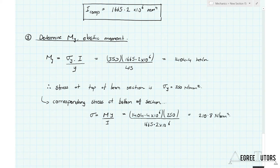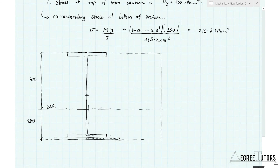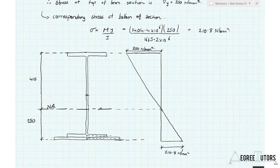The corresponding stress at the bottom of the cross-section works out to 210.8 N/mm², which has not yet reached the yield stress. Assuming compression is induced in the top flange, the top flange will begin to yield first. The stress distribution shows that at the onset of yielding, the bottom is still elastic. The section still has capacity left before becoming fully plastic, so we need to find the plastic moment. To do that, we first need to determine an equal area axis — an axis that splits the compound area into two equal areas, top and bottom.